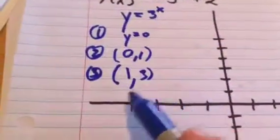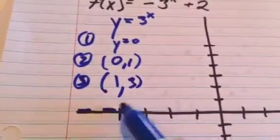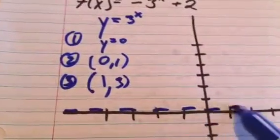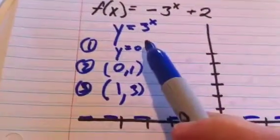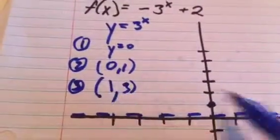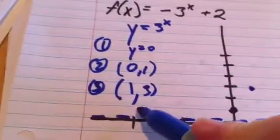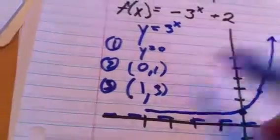So if I plot the parent graph, I have an asymptote at y equals 0. They'll all go through the point (0, 1), and then this one will go through the point (1, 3). So if I graph that, that's my parent function.